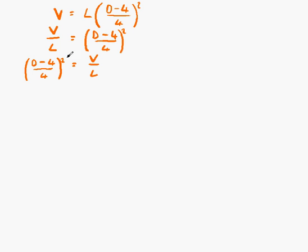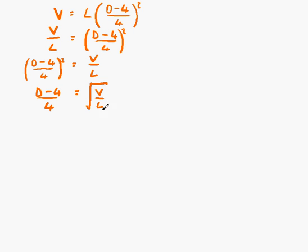This side is squared. In order to help us along, what we want to do now is unsquare that — or in other words, take the square root. The square root of D minus 4 over 4 all squared is just D minus 4 over 4. We've taken the square root on the left hand side, which means we must take the square root on the right hand side, giving us the square root of V over L.